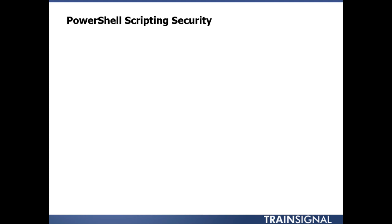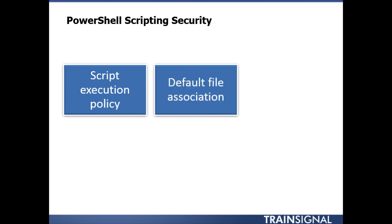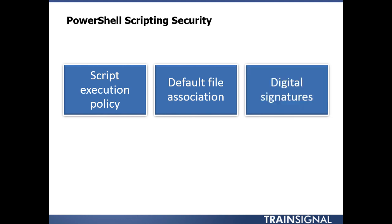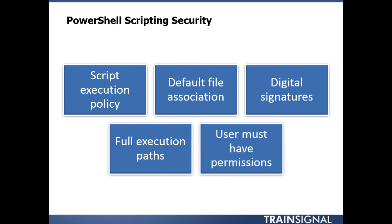PowerShell scripting security falls into a number of areas. There is something called a script execution policy, which is a setting that controls whether you can run a script or what types of scripts you can run. There is a default file association for the PowerShell script. PowerShell scripts can be digitally signed. In order to run a script, you have to use the full path to the PowerShell script. And of course, users must have the appropriate permissions, privileges, tools, and access for whatever the script is expected to do.